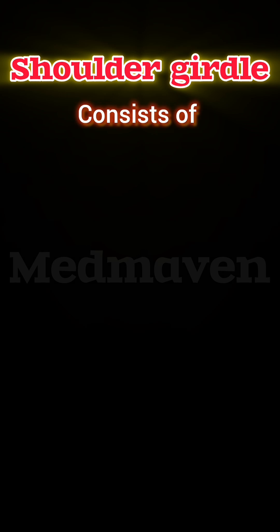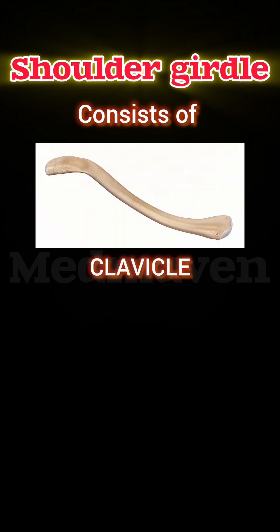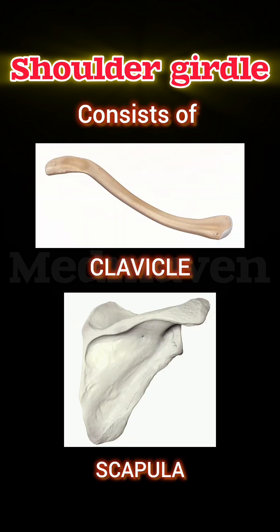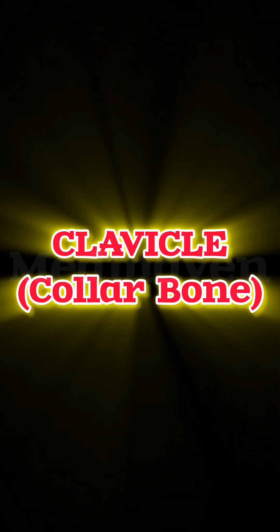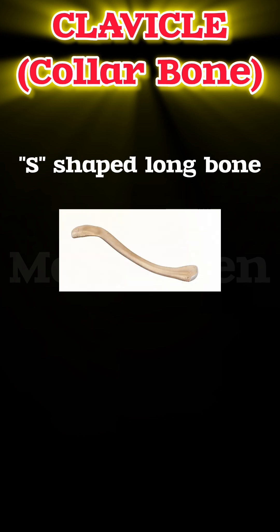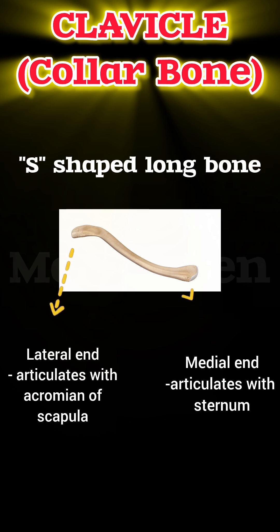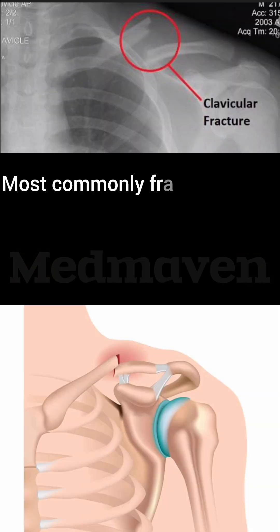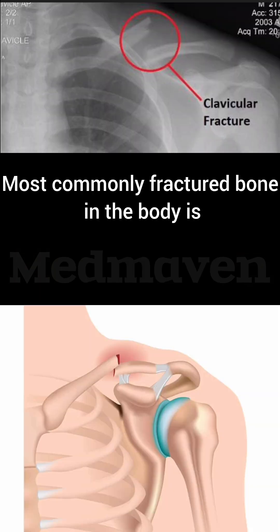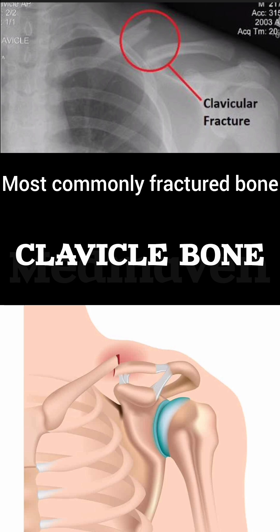The shoulder girdle consists of the clavicle and scapula. The clavicle, or collarbone, is an S-shaped long bone. Its medial end articulates with the sternum, and its lateral end articulates with the acromion of the scapula. The clavicle is the most commonly fractured bone in the body.